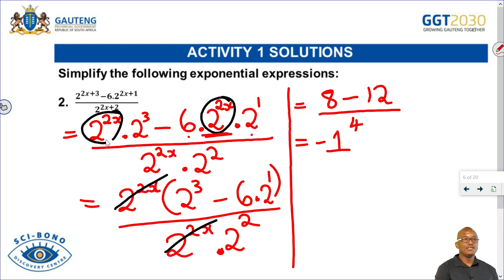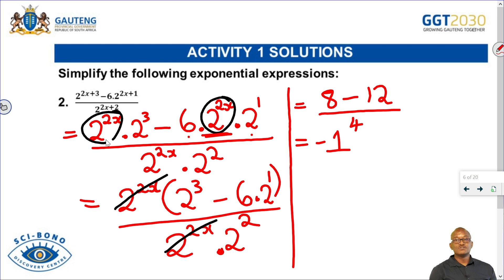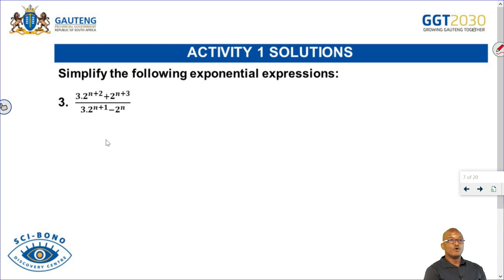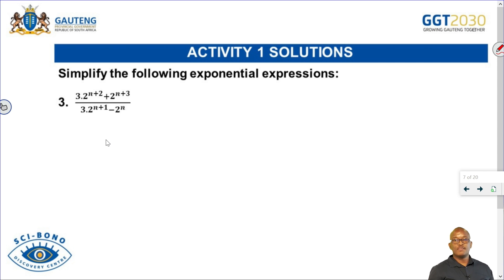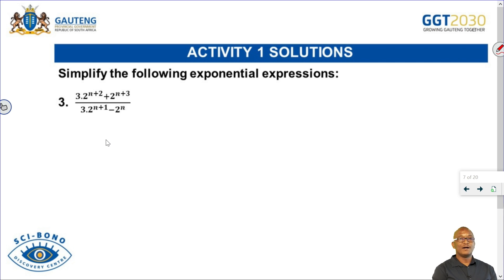That's how you simplify that expression. It's as easy as ABC — you just need to follow the correct steps. Going to the third activity, we can see that now the variables in the exponents are n. Remember they can put any variable — m, x, n, y — but the method remains the same.